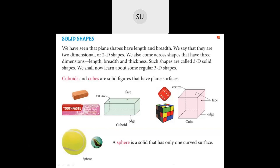The corners of a cuboid are called vertices, the surfaces are called faces, and the straight sides are called edges. The dotted lines you see are the edges at the back that you cannot see from the front. A place where three edges meet is called a vertex, the plain surface is called a face, and the straight sides are called edges. A cuboid has six faces, eight vertices, and twelve edges.